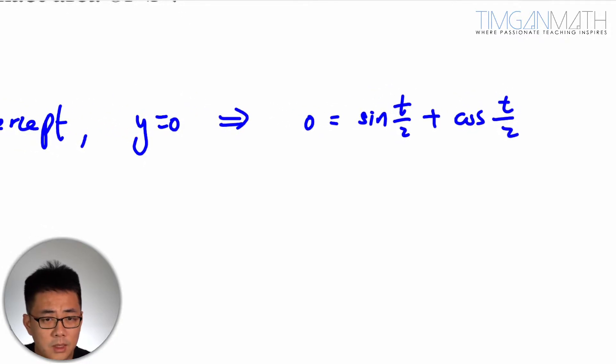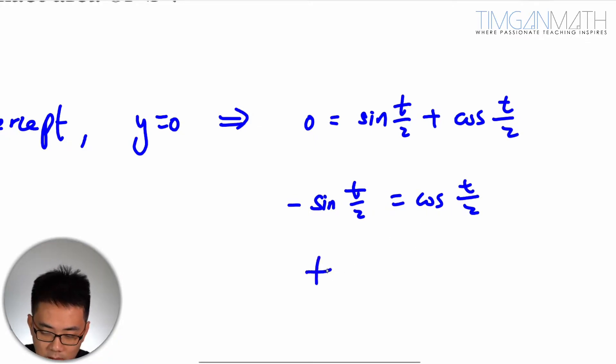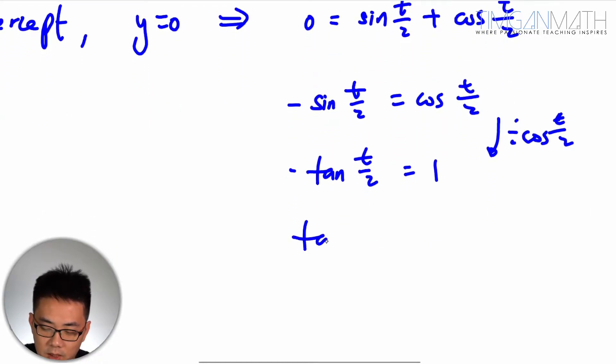So once I've done this, this will be -sine(t/2) equals cosine(t/2). So very simply, I could just divide both sides by sine and cosine. Then this will be tangent(t/2) equals 1. So divide by cosine(t/2). Then this case here will be tangent(t/2) equals negative 1.